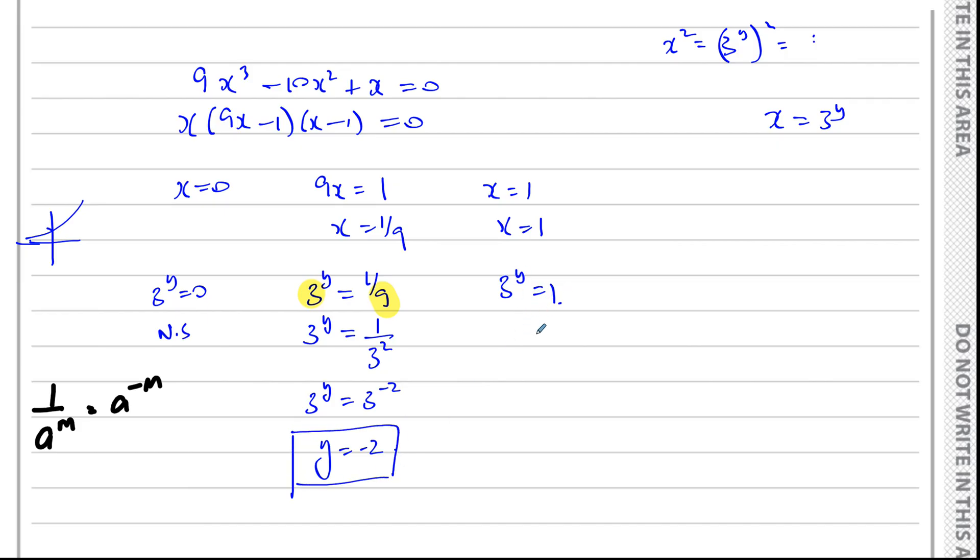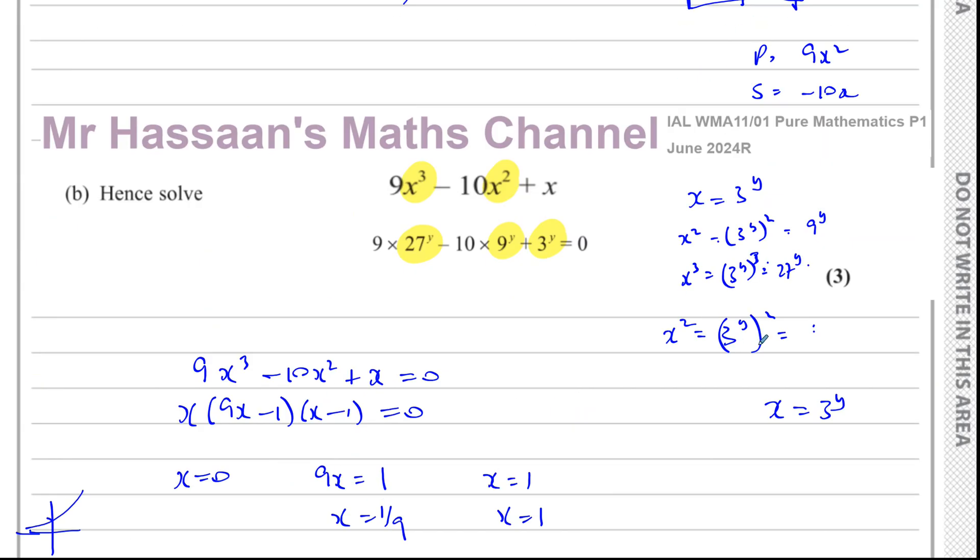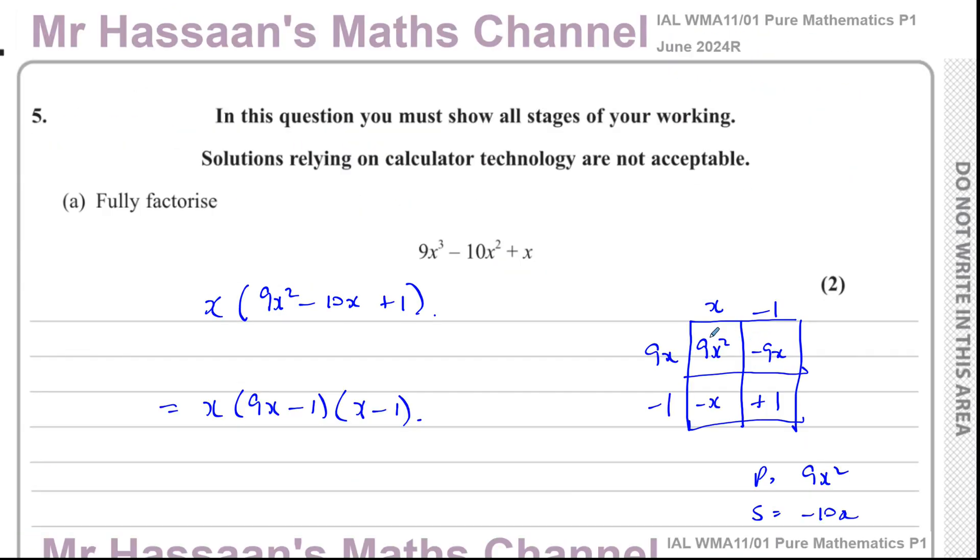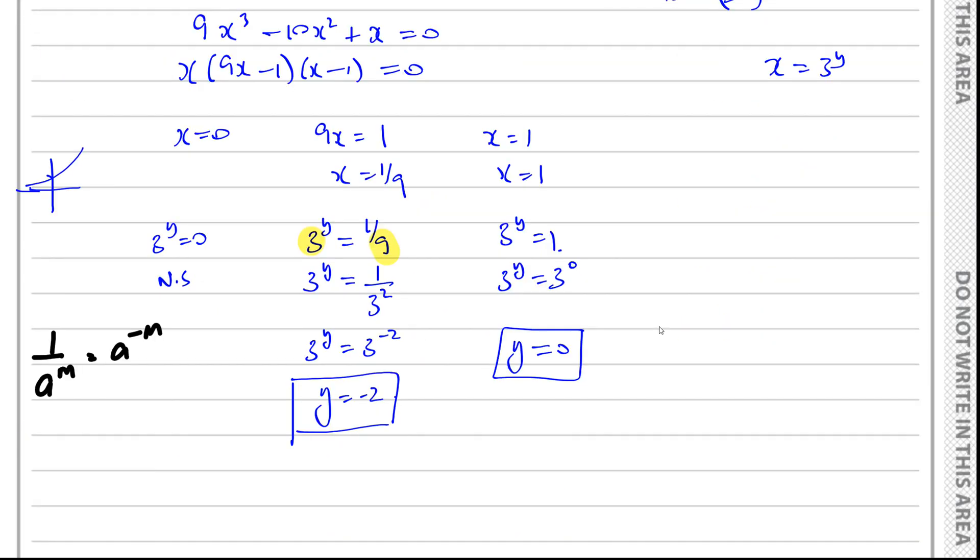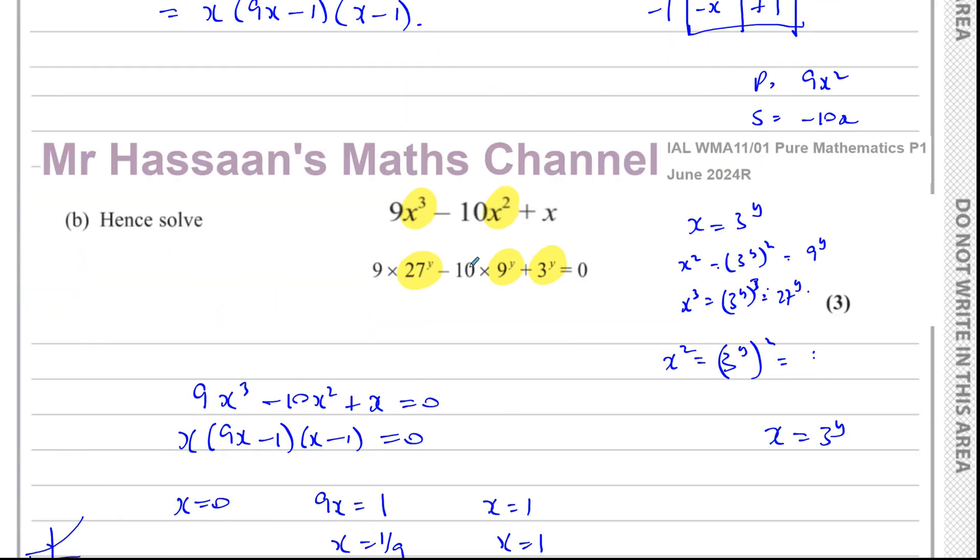And here we know that 3 to the power of y equals 1. Of course, we know anything to the power of 0 is equal to 1. You can think of it as you want, as express 1 as 3 to the power of something. Well, 1 is 3 to the power of 0. And if the bases are the same, the powers must be the same. So y is equal to 0. Now, let's have a look at the question here. It doesn't give us any limitations. No, so y can be 0. So those are the two solutions to this equation.